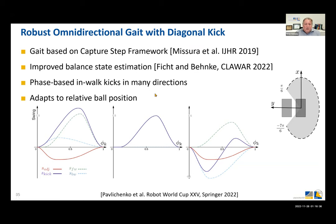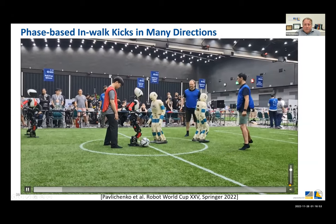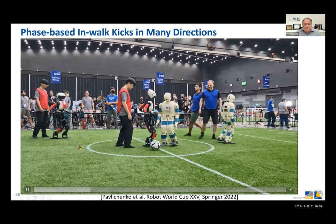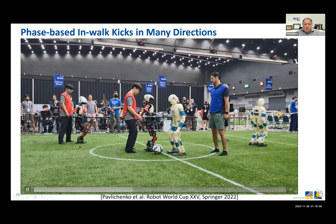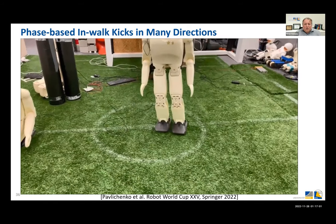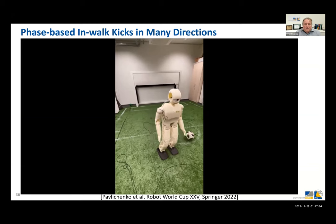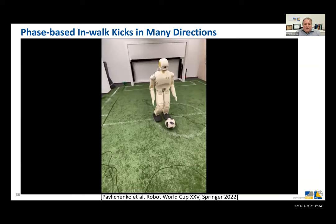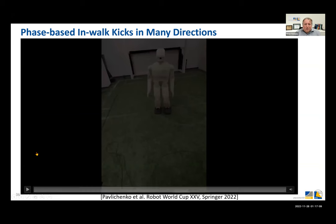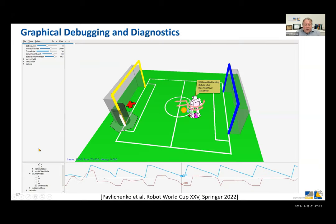We extended the omnidirectional gait with kicks in many directions, not just forward. We improved state estimation so the kicks are adaptive to the relative ball position and can be made in all feasible directions. During the game this is very useful because we no longer need to precisely align the robot — it can kick to the side or diagonally, though it kicks more strongly in the forward direction.